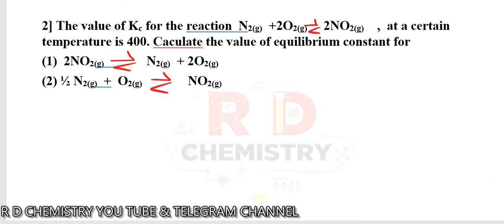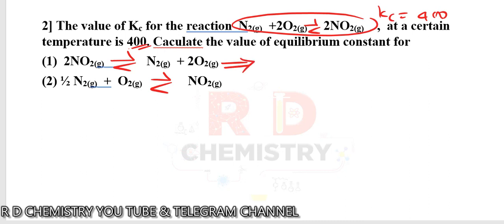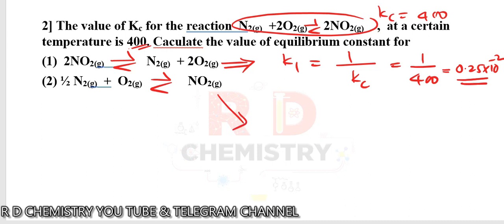Second example: The value of Kc for a given equation is 400 at a certain temperature. Calculate the equilibrium constant for two related equations. The first related equation is exactly the reverse of the original equation. Since the equation is reversed, K1 = 1/Kc = 1/400 = 0.0025 (i.e., 0.25 × 10⁻²). The number of moles has not been changed, so no power factor is applied.